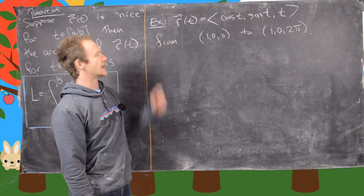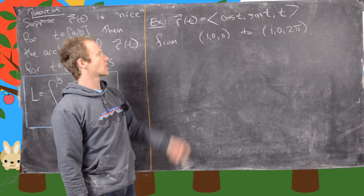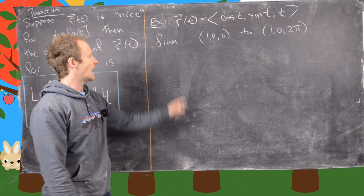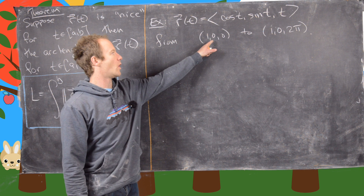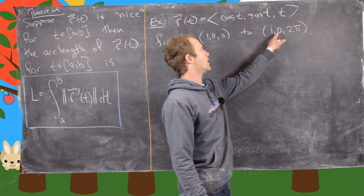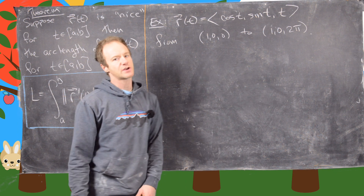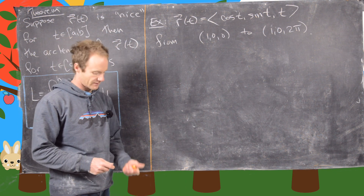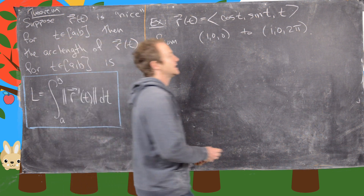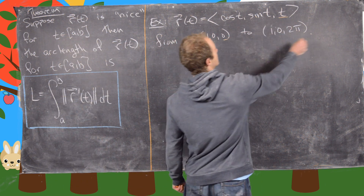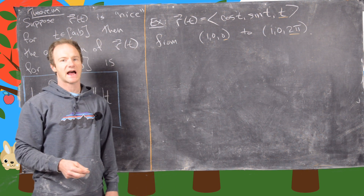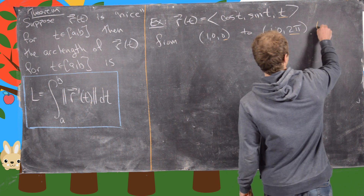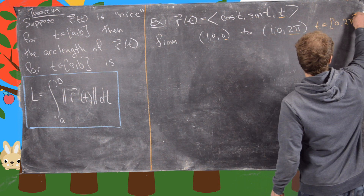The example we want to look at is the following. Let our curve be defined by the vector-valued function (cos t, sin t, t). We're going from the starting point (1, 0, 0) to the ending point (1, 0, 2π). It's easy to find the parameter values here because the third component is exactly the value of the parameter, so t is in the interval from zero to two pi.